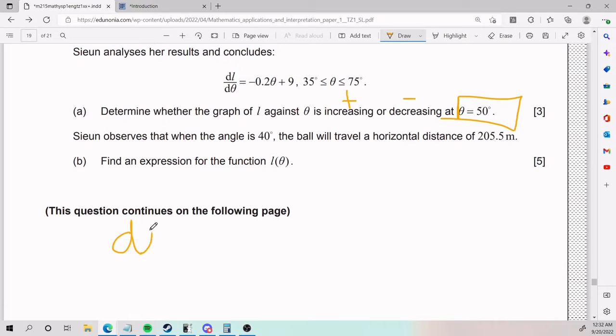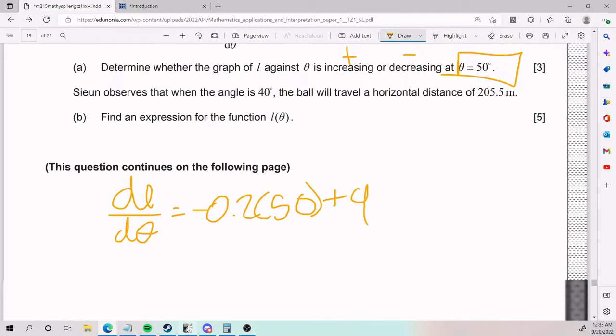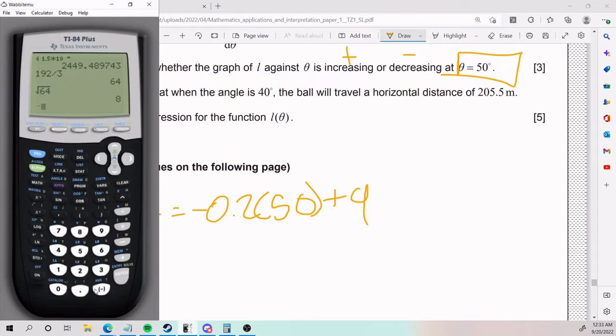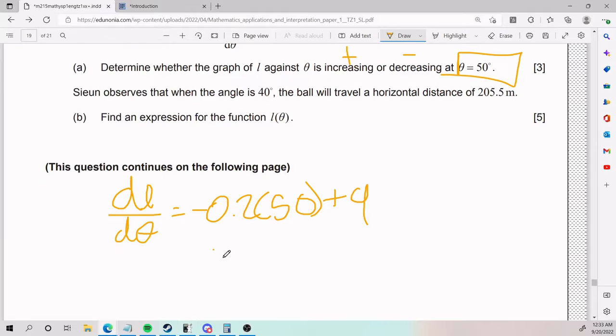So I'm going to take dL divided by dθ equals negative 0.2 times 50 plus 9. So negative 0.2 times 50, apologize, gives me negative 10 plus 9, negative 1. So negative 10 plus 9, negative 1.